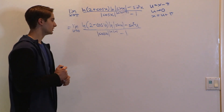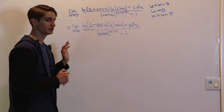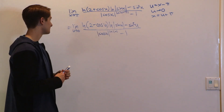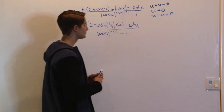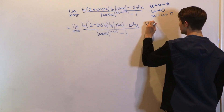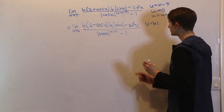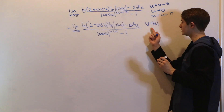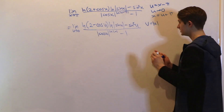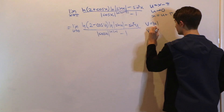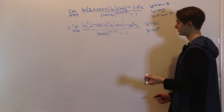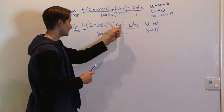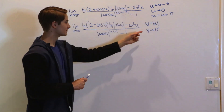The last thing we want to deal with before turning this into a Taylor series expansion is all these absolute values. So let's see if we can substitute v = |u|. As u approaches 0, the absolute value of u will also go to 0, but only from the right, because the absolute value function is always positive. Let's see if we can turn all of our u's into |u| so we can make this substitution.